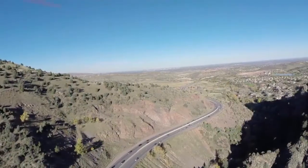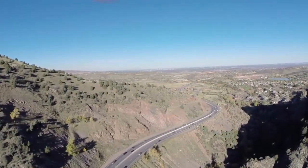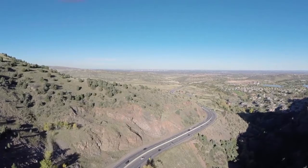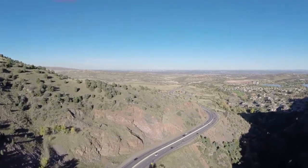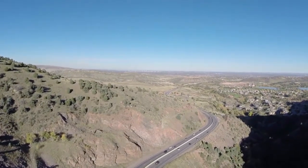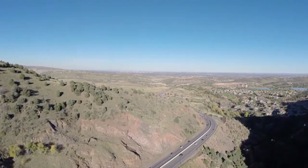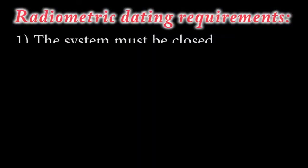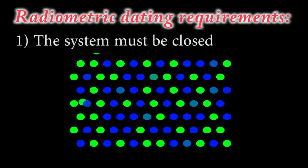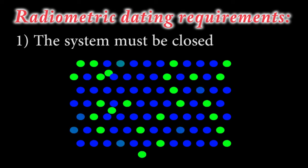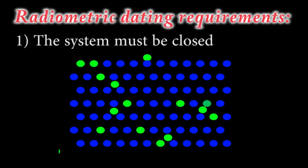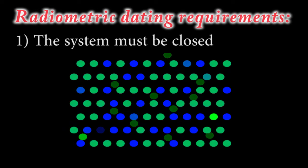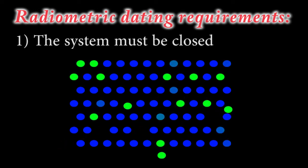We start by realizing that there are assumptions involved with radiometric dating which must be satisfied for it to work, and thus we must be selective in which materials we date. The first assumption is that the sample is closed with respect to parent and daughter. If any parent leaks in or daughter leaks out, the sample will read younger than its actual age, and if the parent leaks out or the daughter leaks in, it will appear older than it is.